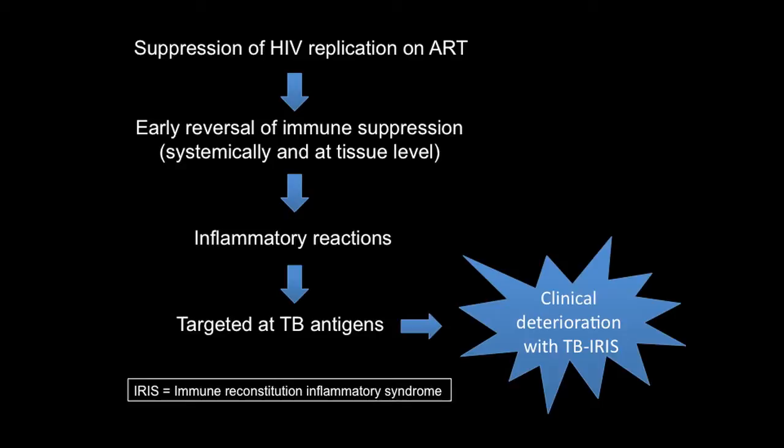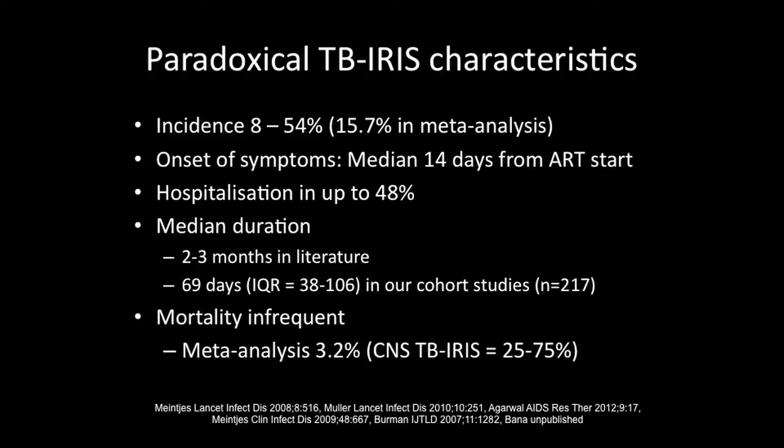Essentially what's happening with TB IRIS is suppression of HIV replication and early reversal of immune suppression — both systemically and at a tissue level — causing changes in immune function that drive inflammation directed at TB antigens still persistent in the tissue despite TB treatment. This results in the clinical deterioration that manifests as TB IRIS.